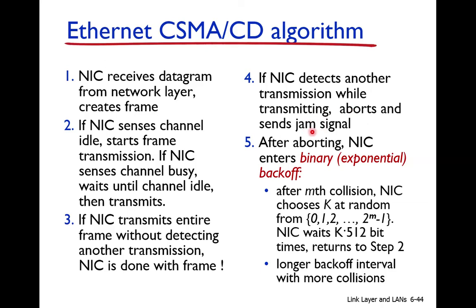After stopping transmission and sending the jamming signal, the third step is that the NIC enters the binary exponential backoff algorithm. This means: if this is the m-th time a collision is detected consecutively, the NIC chooses k at random from 0 to 2^m − 1, and waits for k × 512 bit times. After this waiting time, the node senses the medium again. If the medium is found free, the node transmits the data.